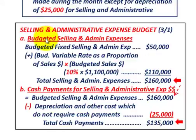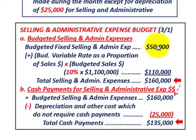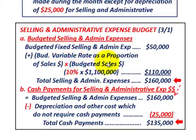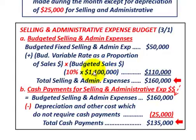First, we determine our budgeted selling and administrative expenses. We start with the budgeted fixed portion of $50,000 for the month. Then we add the budgeted variable rate: in this case 10% as a proportion of our budgeted sales dollars. Our budgeted variable rate is 10%, and our sales dollars are $1,100,000, so 10% of that gives us $110,000.